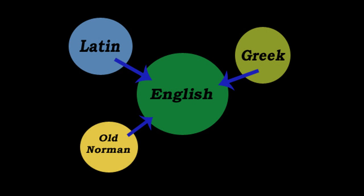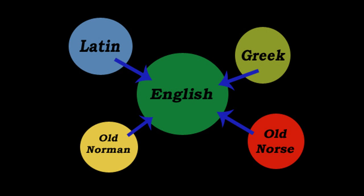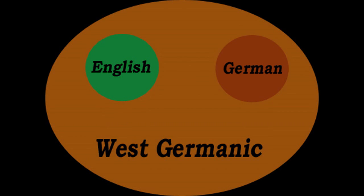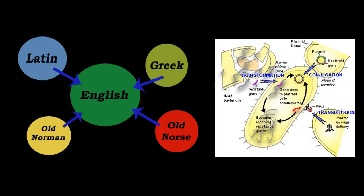English is a perfect example, with its influence from Latin, Greek, Old Norman, and Old Norse. Despite originating from the West Germanic language of the Anglo-Saxon tribes, it gained words from all of these other languages, just as a bacterium might gain new genetic material from another bacterium that isn't necessarily a close relative.